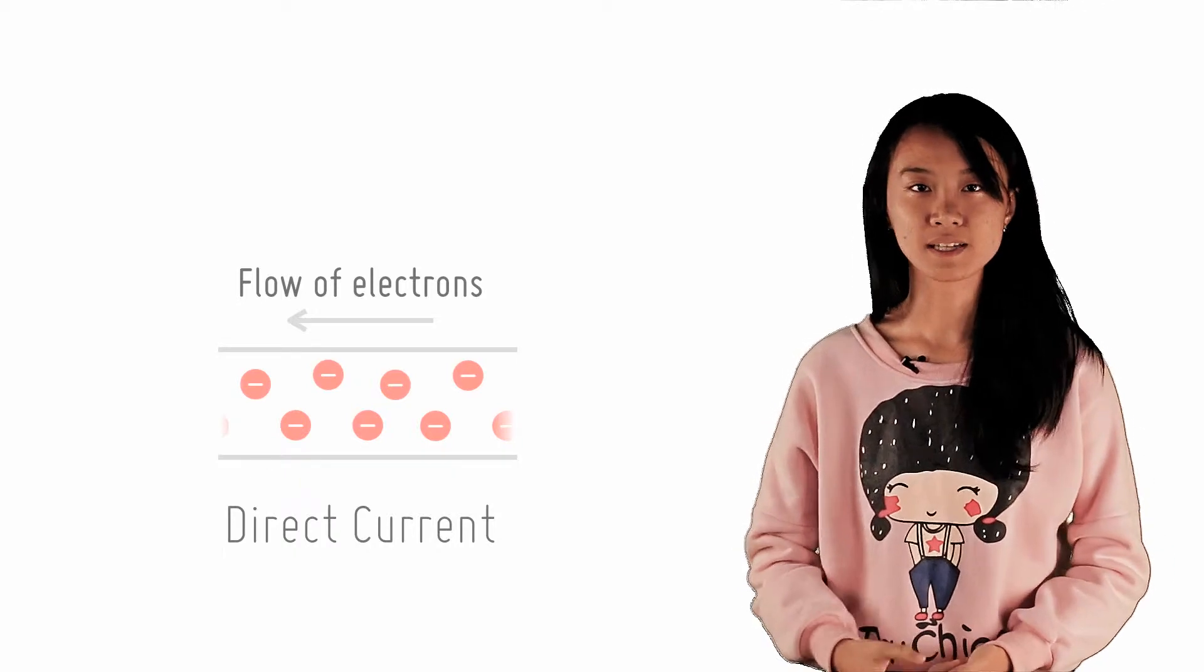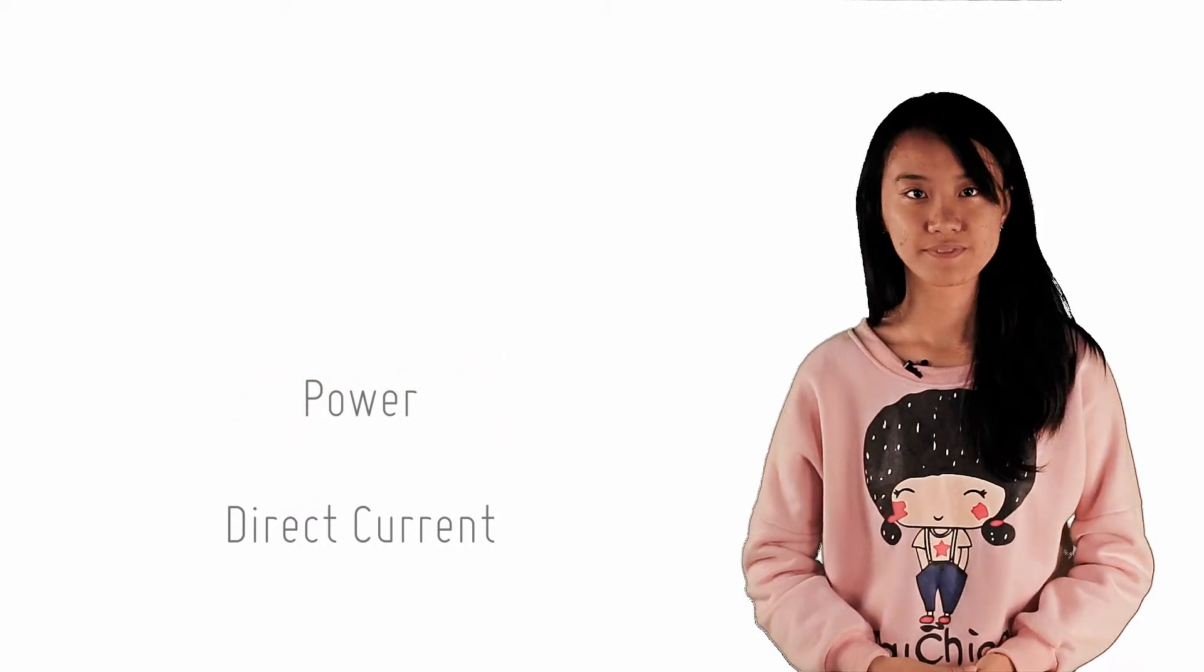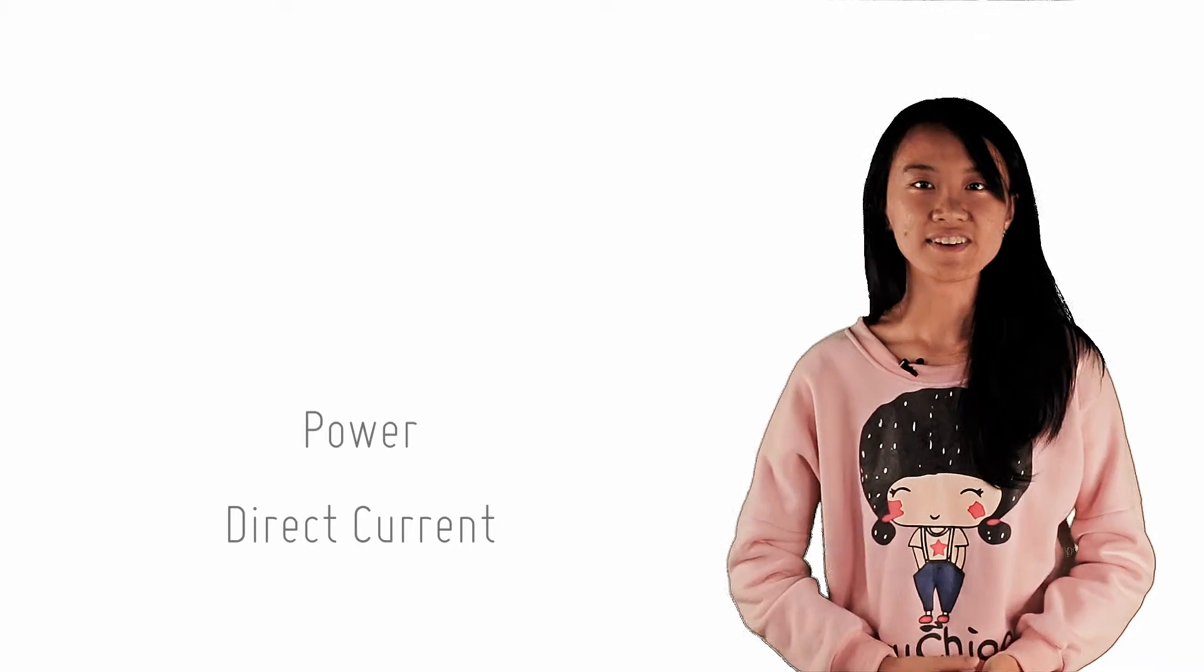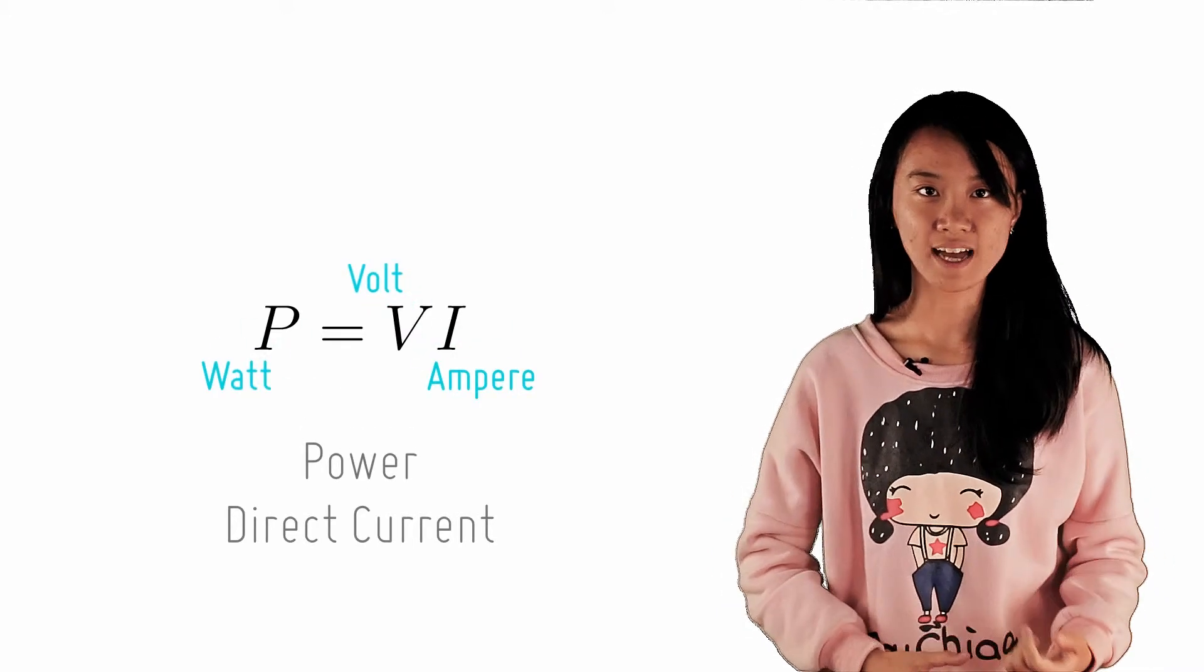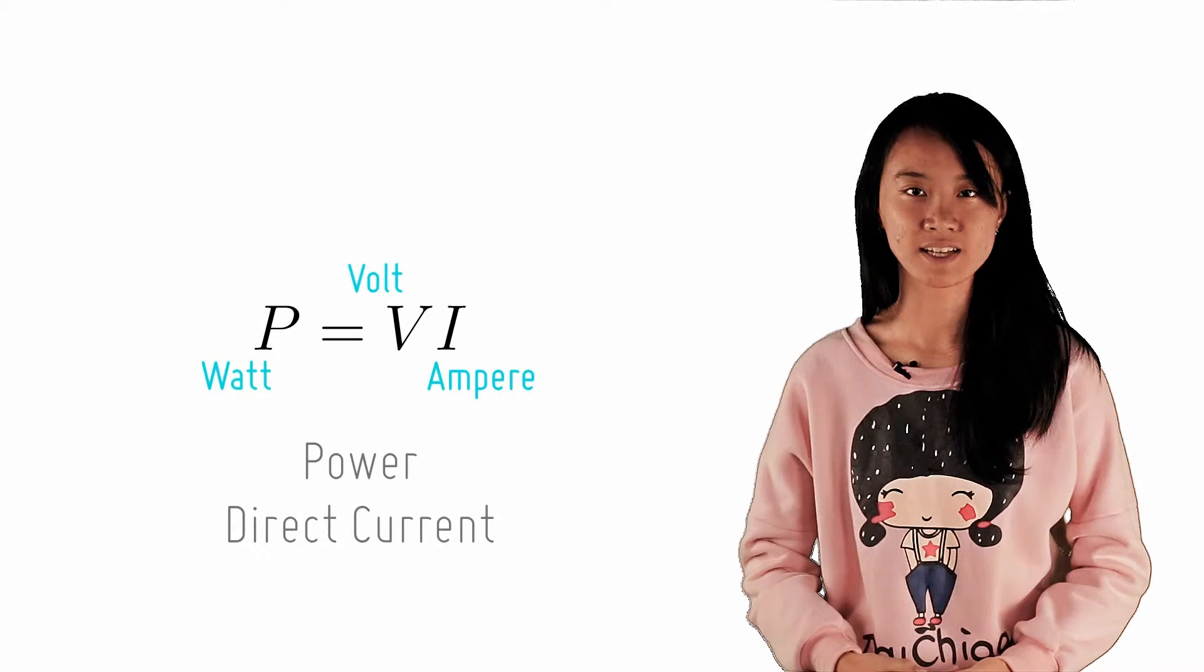Next, can you remember how to calculate the power in a direct current circuit? That's right! The rate of energy dissipated throughout a direct current circuit is current I of the circuit multiplied by its voltage V.